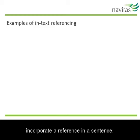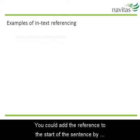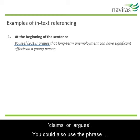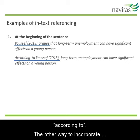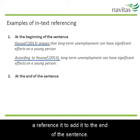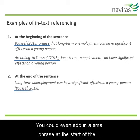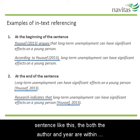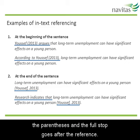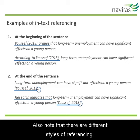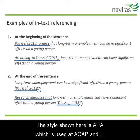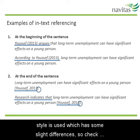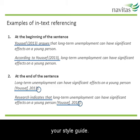Let's now have a look at different ways you can incorporate a reference in a sentence. You could add the reference to the start of the sentence by using the author's surname and a word like 'states', 'claims' or 'argues'. You could also use the phrase 'according to'. The other way to incorporate a reference is to add it to the end of the sentence. You could even add a small phrase at the start of the sentence like 'research indicates that'. Note that when the reference is at the end of the sentence, both the author and year are within the parentheses and the full stop goes after the reference. There are different styles of referencing — APA is used at ACAP and HSA, but NCPS students should note that a different style is used, so check your style guide.